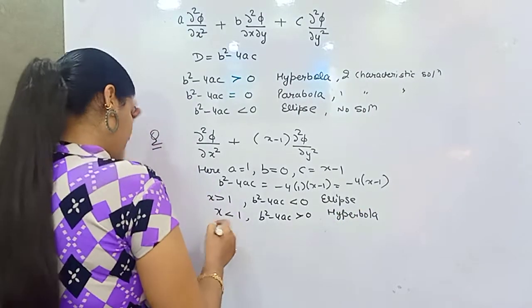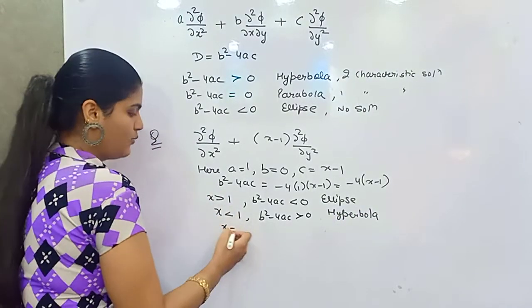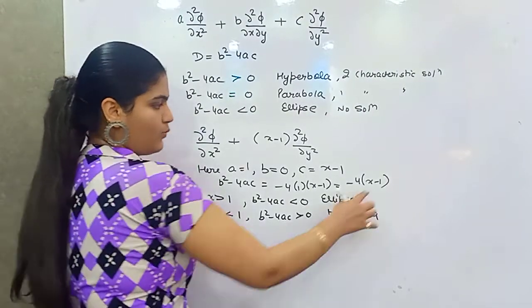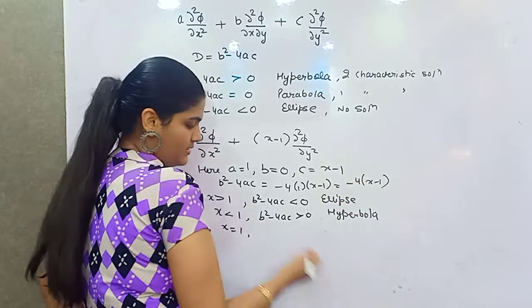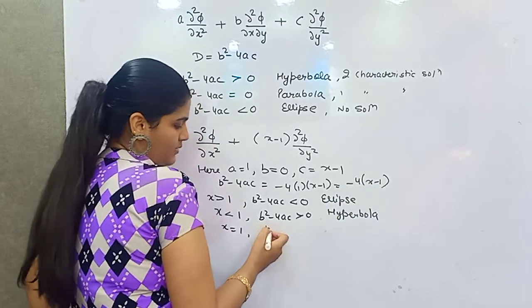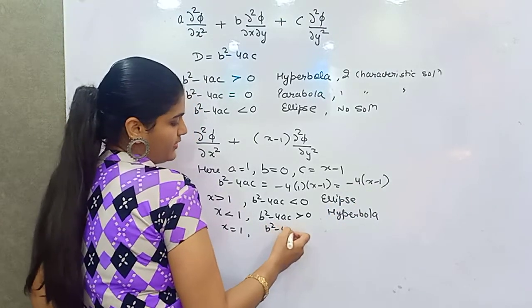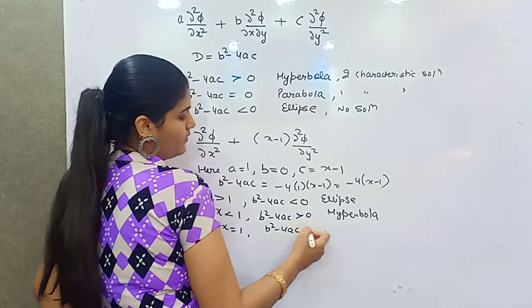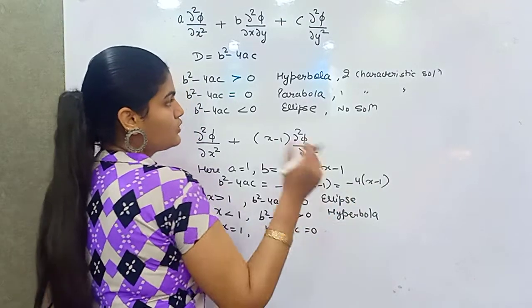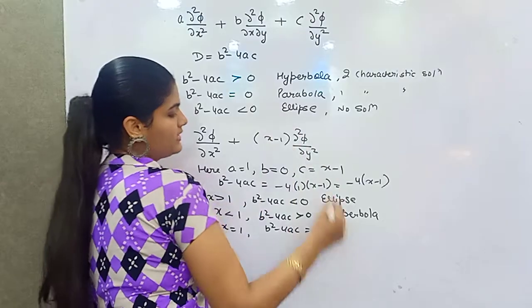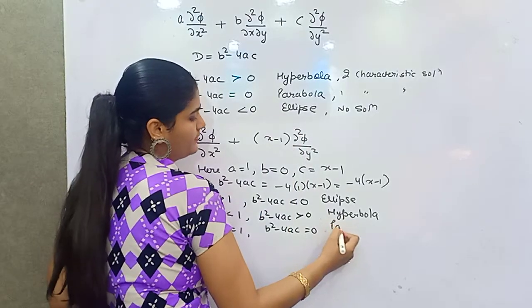If x is exactly equal to 1, then (x minus 1) equals 0, so b squared minus 4AC equals 0, which means the equation is a parabola.